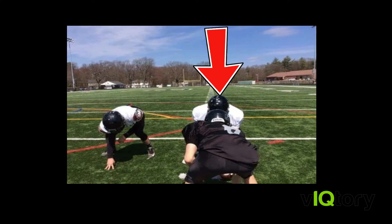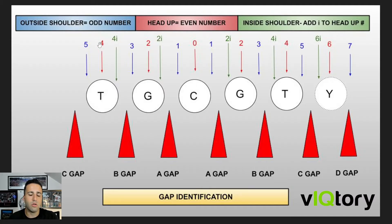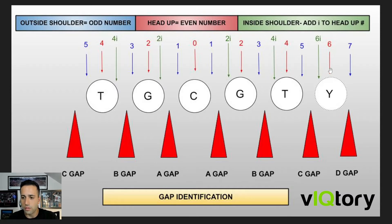Anytime a defender is head up on an offensive lineman, it is going to be an even number. Starting with zero, then going to two for the next defender — there's no plus, there's no minus, it's all the same on each side of the ball. So zero here, two here, four here — four being head up on the tackle. There's also some controversy about what you call a tight end, but what we do is call it a six, continuing with four and then six being head up on the tight end.